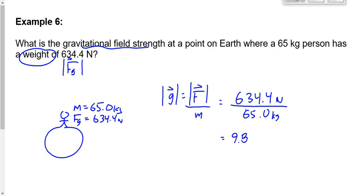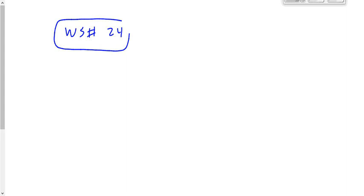Does that seem like a reasonable answer for the gravitational field experienced by this person? Yes — on average on the Earth it's about 9.81. It could be as low as 9.76 or 9.77 if you're at a little bit of an altitude. We're going to take a look now at worksheet number 24 — all of the questions on that worksheet, questions 1 to 10.